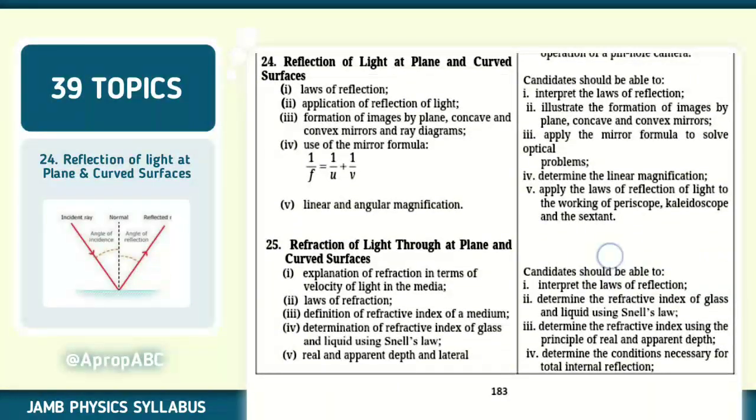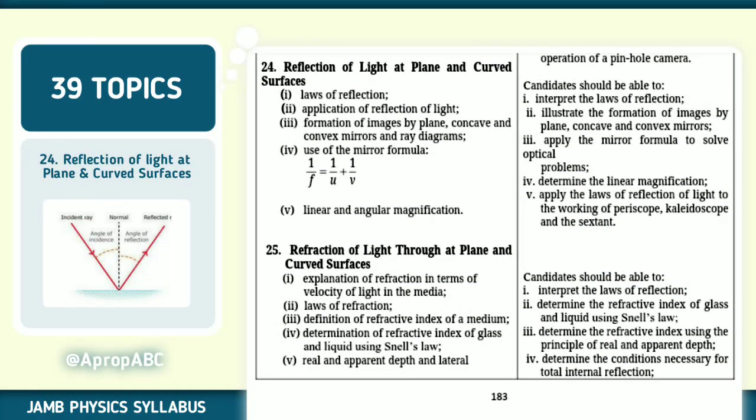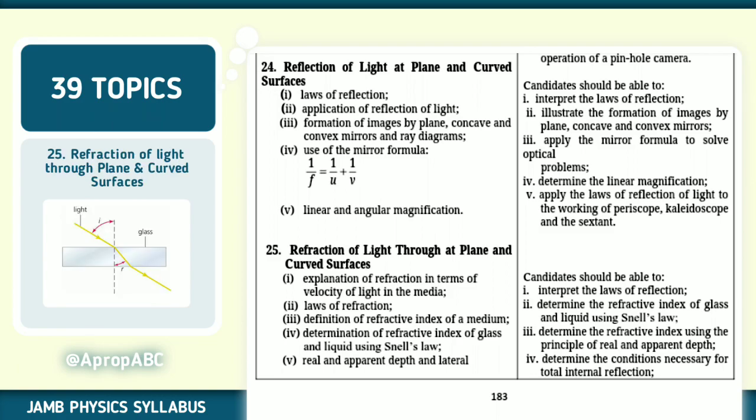Number 24, reflection of light at plane and curved surfaces. We have laws of reflection, application of reflection, formation of images by plane, concave and convex mirrors and ray diagrams. Use of mirror formula. Linear and angular magnification. Make sure that you can determine the linear magnification and also apply the law of reflection of light to the principle and working of periscope, kaleidoscope, and also sextants. So sextant. Make sure you note that very well.